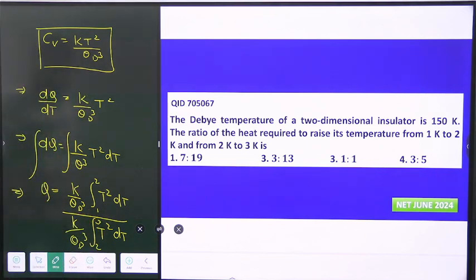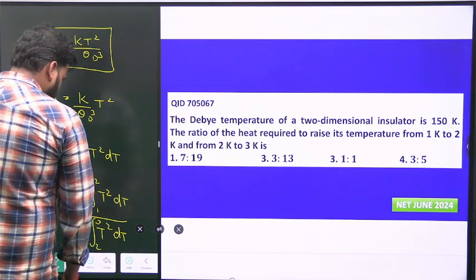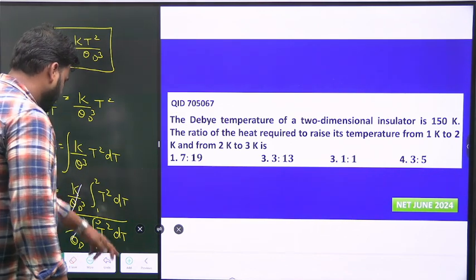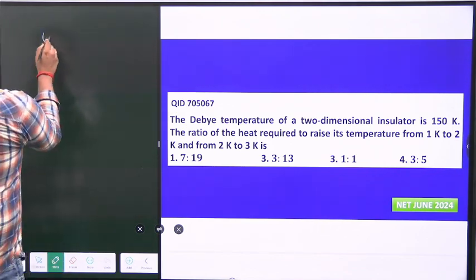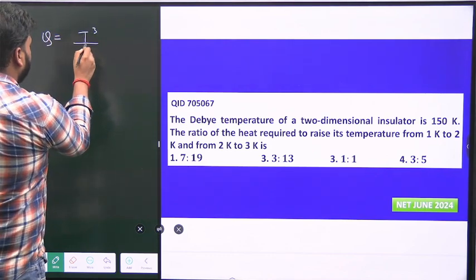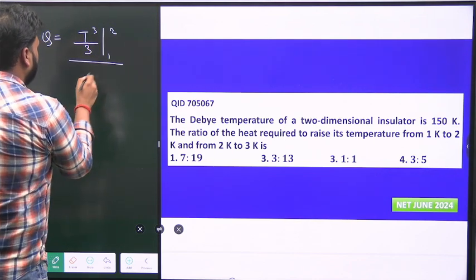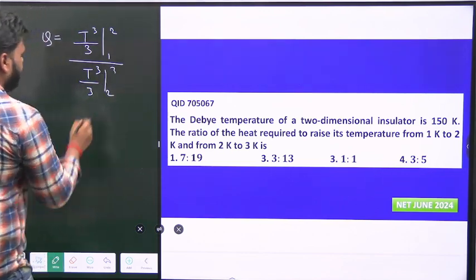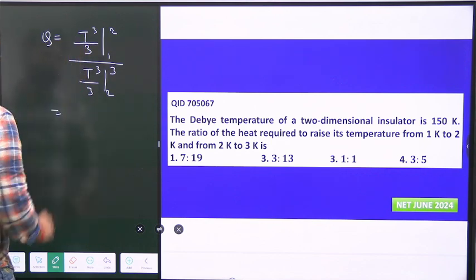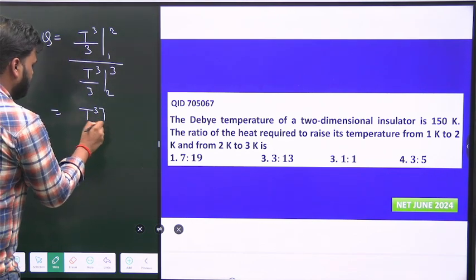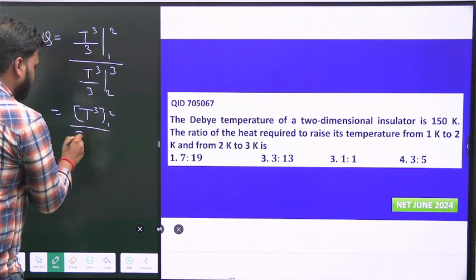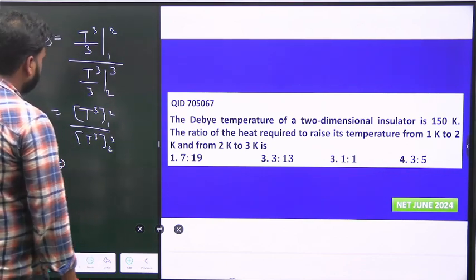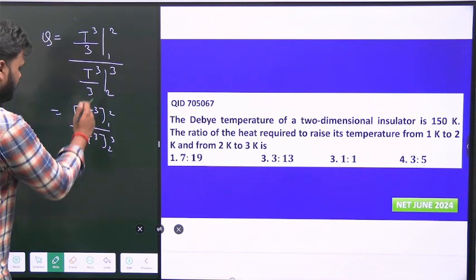This portion K by theta_D cubed cancels out. Solving, we get T cubed over 3 evaluated from 1 to 2, divided by T cubed over 3 from 2 to 3. The 3's cancel, so we have T cubed from 1 to 2 divided by T cubed from 2 to 3. Putting the values: (2³ - 1³) divided by (3³ - 2³) equals (8 - 1) divided by (27 - 8).